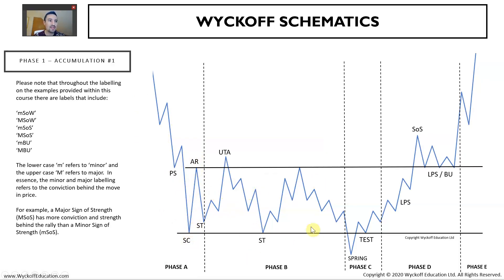We then move into phase B. Phase B, for both accumulation and distribution structures, is all about building a cause - either for distribution or for accumulation. We've got our up-thrust action and a secondary test at the selling climax. We're going to apply all of this labeling and structural phase analysis to real price charts in a moment.